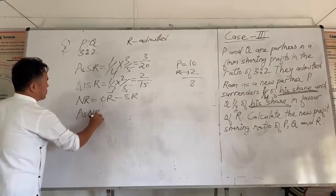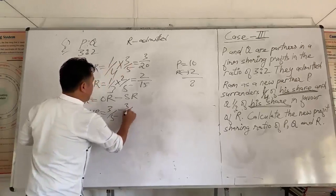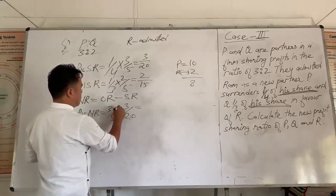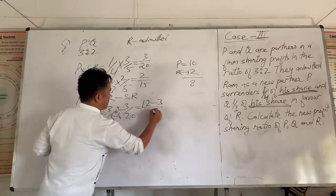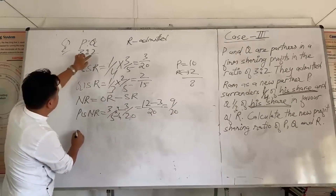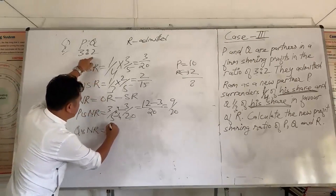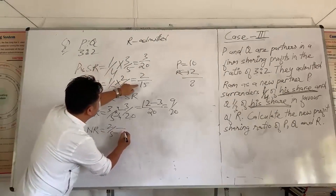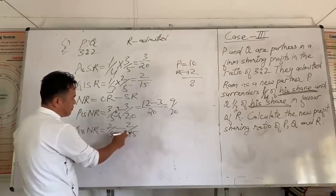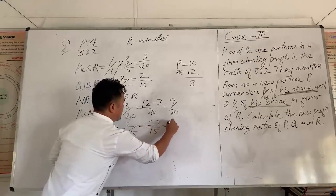Now P's new ratio: P's old ratio is 3 by 5 minus P's sacrificing ratio of 3 by 20. Making denominators the same: 3 by 5 becomes 12 by 20. So 12 minus 3 divided by 20 gives 9 by 20. Now Q's new ratio: Q's old ratio is 2 by 5 minus Q's sacrificing ratio of 2 by 15. Making denominators the same gives 6 minus 2 divided by 30, which is 4 by 30.